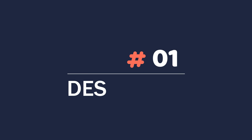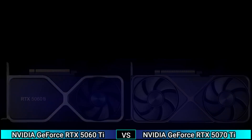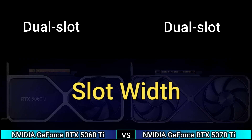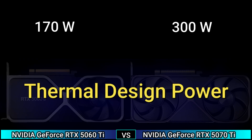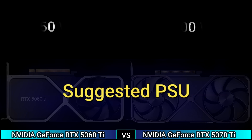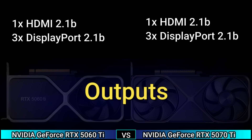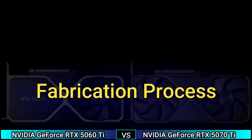Firstly, design slot: single slot wide, dual slot. Thermal design power: 170 watt and 300 watt. Suggested PSU: 450 watt and 700 watt. Output: 1x HDMI 2.1, 3x DisplayPort 2.1. Fabrication process: 5 nanometer. Die size and transistor count follow.